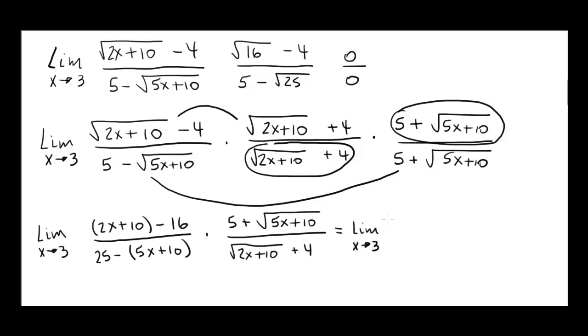Let's clean up this part, 2x plus 10 minus 16 is 2x minus 6 which we can write as 2 times x minus 3. Then the denominator, 25 minus 10 is 15 minus 5x.